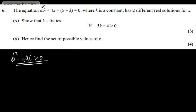If we look at the quadratic, it's in the form ax squared plus bx plus c equals 0, so we can say that a will be equal to k, b will be equal to 4, and then c will be equal to the quantity 5 minus k.